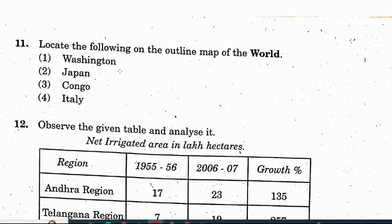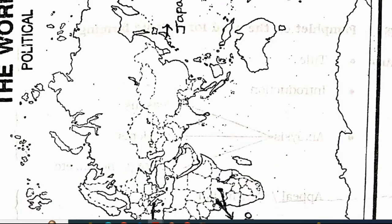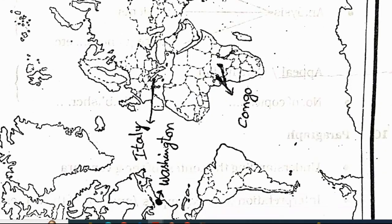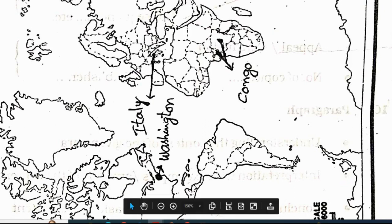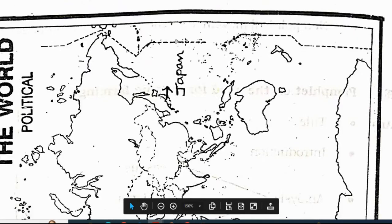Question 11: locate the following on the outline map of the world — Washington, Japan, Congo, Italy. Congo is located here, followed by Washington, Italy and Japan.